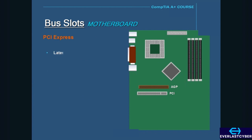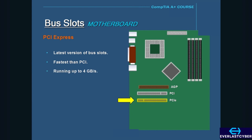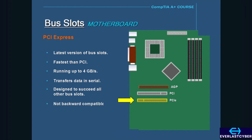PCI Express is the latest version of bus slots. It's faster than its predecessor, with speeds up to 4 gigabytes per second. And unlike standard PCI, which transfers data in parallel, PCI Express transfers data in serial. Transferring data in serial is much faster than parallel because serial data is transferred in packets. PCI Express was designed to succeed all other PCI bus slots and AGP, and it is not backward compatible with standard PCI because the architecture is very different.